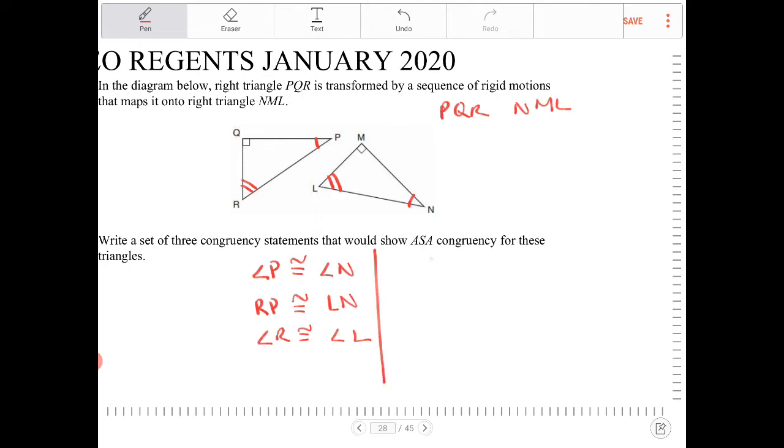You can say angle Q is congruent to angle M because they're both right angles. And you can say QP is congruent to MN.